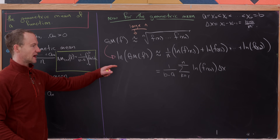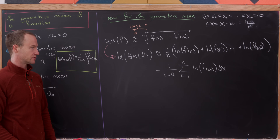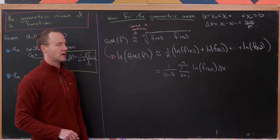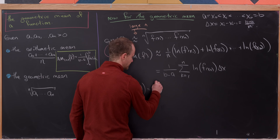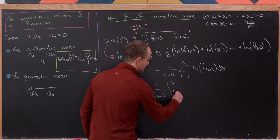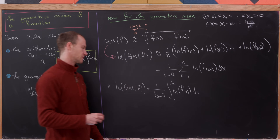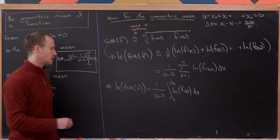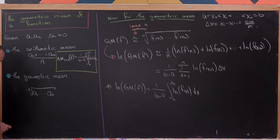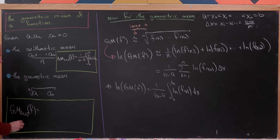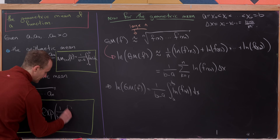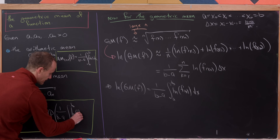The logarithm of the geometric mean is approximately equal to this sum — not the geometric mean itself. We convert the approximate equality to an exact one by taking a limit, giving: ln(GM of f) = (1/(b-a)) times the integral from a to b of ln(f(x)) dx. Since this is the logarithm of the geometric mean, we exponentiate both sides. So the geometric mean of f on [a, b] equals exp((1/(b-a)) · ∫_a^b ln(f(x)) dx).